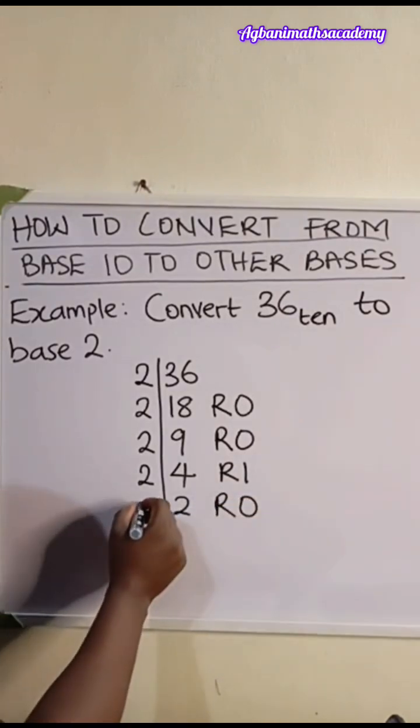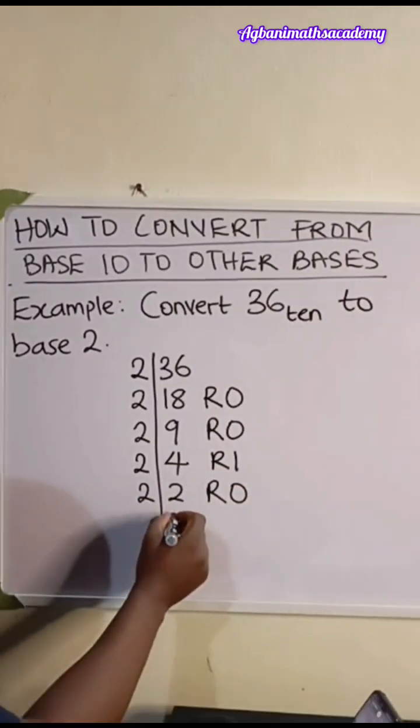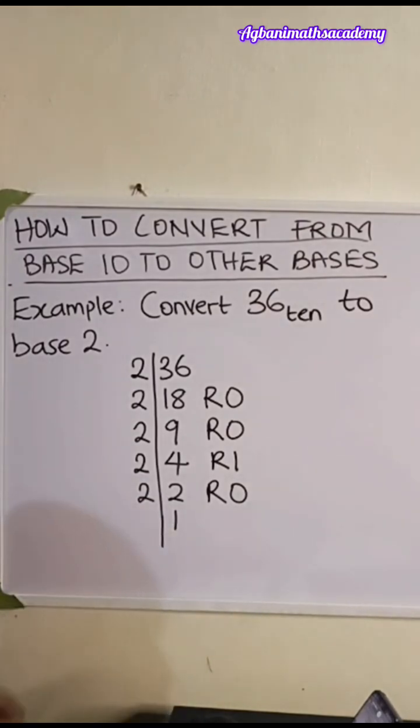So we go again by 2. 2 divided by 2 gives us 1. Will there be a remainder? Our remainder will be 0.